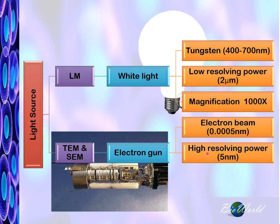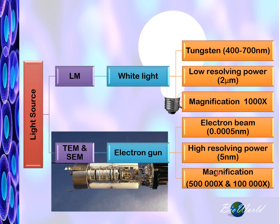The minimum distance can be as little as 5 nanometers. Magnification can also be as much as 500,000 times in the transmission electron microscope and 100,000 times in the scanning electron microscope.